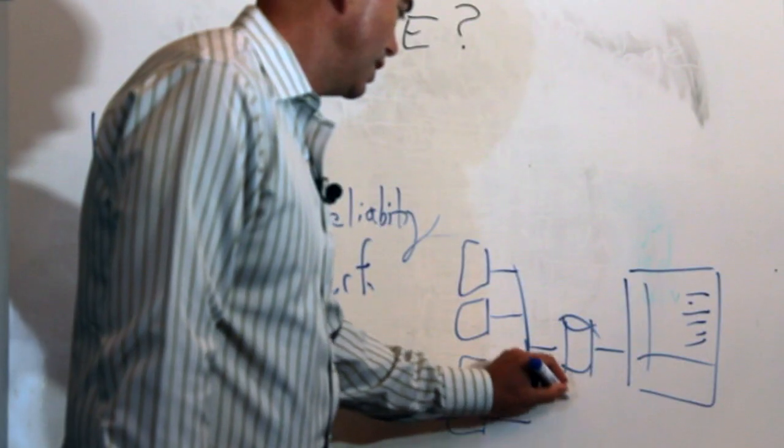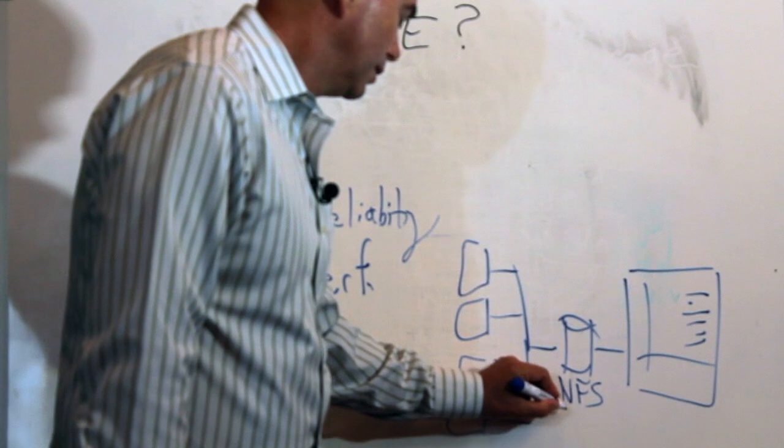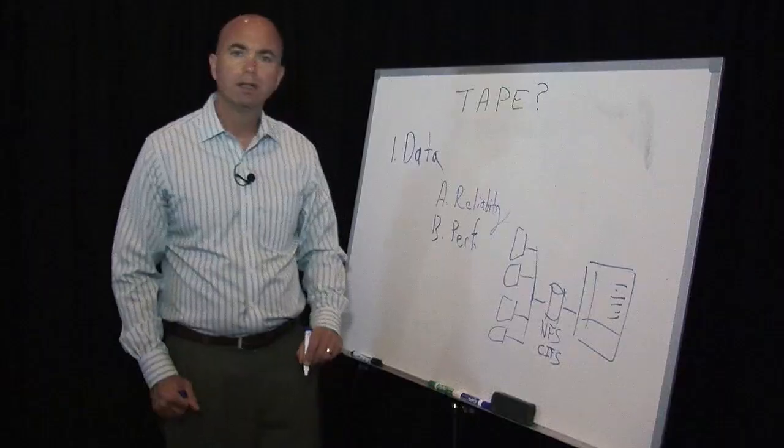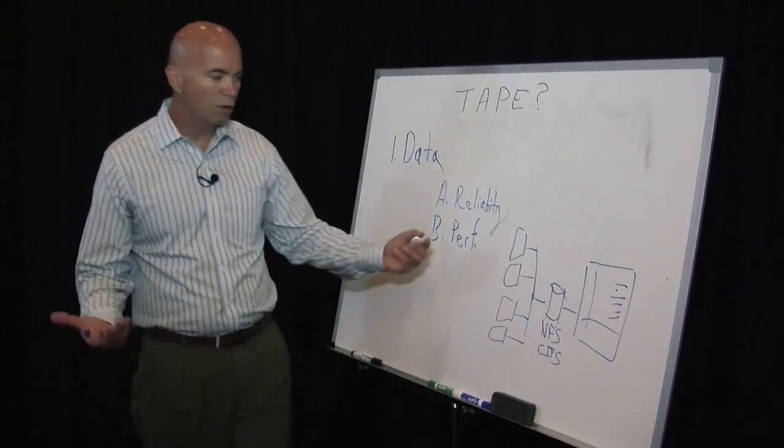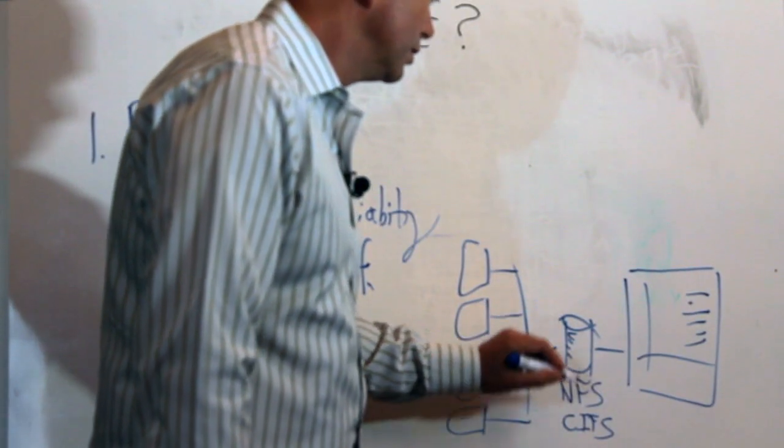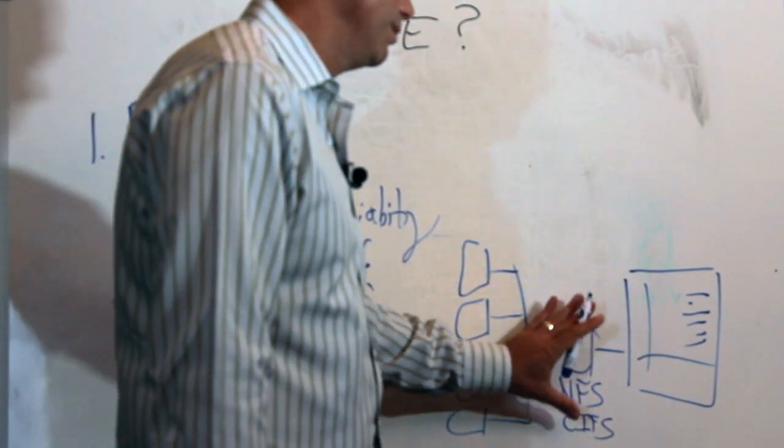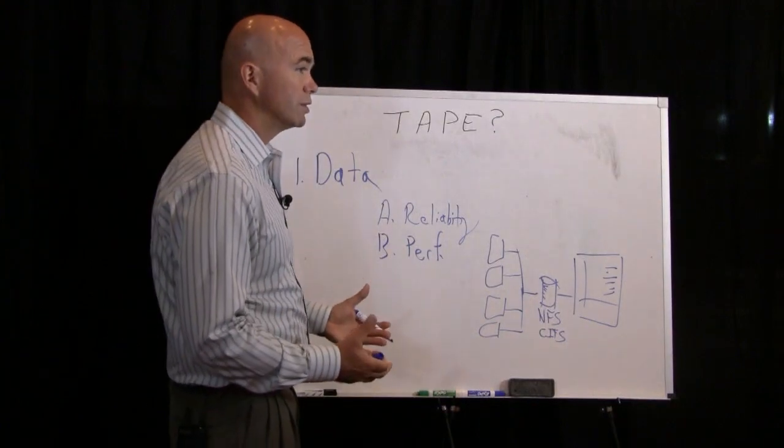So, depending on the application, this could be an NFS mount point or it could be a CIFS or SMB mount point. So you access it just like you do any other drive on your network. And all you do is copy data into here. The software that does all this stuff automatically manages moving it to tape for you. So that's a very powerful capability.